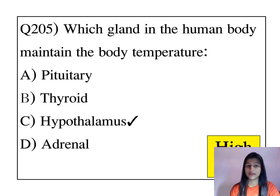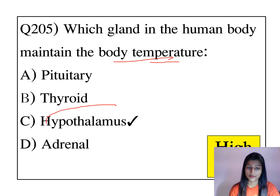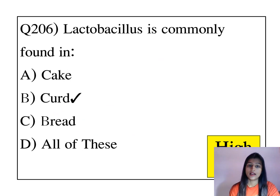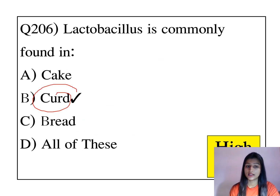Which gland in the human body maintains the body temperature? The hypothalamus helps to maintain the body temperature. Lactobacillus is commonly found in curd.